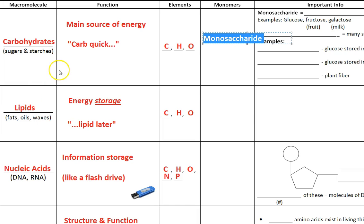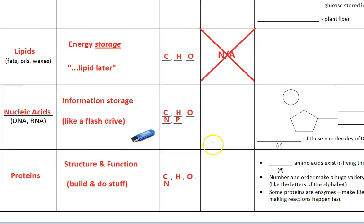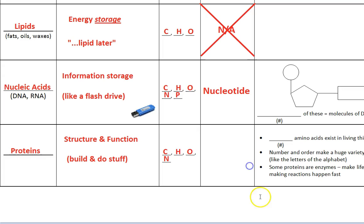Now, the monomers, the single building blocks that build up to make carbohydrates, is called the monosaccharide. That literally translates to single sugar molecule. Lipids are the only one that actually don't have a monomer. There is no single thing that builds up to make lipids. Nucleic acids do. It is called the nucleotide. And protein, there is a two-part one. It is called the amino acid.